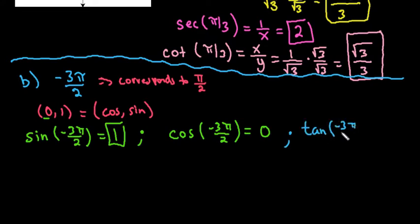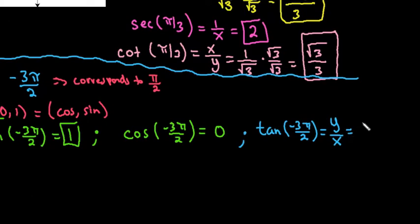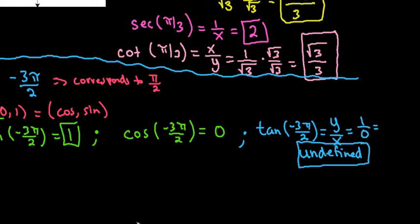Tangent of negative 3 pi over 2 — remember — is equal to y over x. For this particular one, if we put 1 over 0, that is undefined. So tangent is not possible; it is undefined because we are dividing by 0.